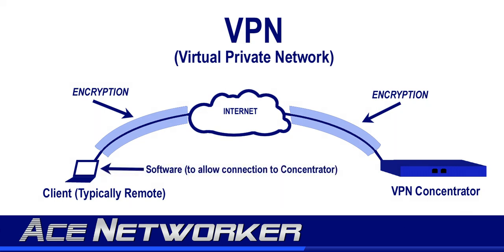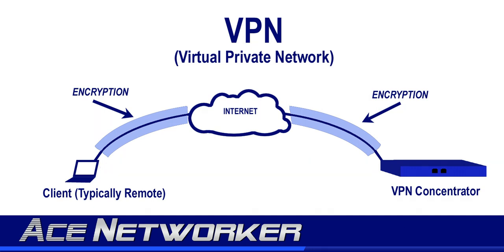A client computer will then have some form of software application that connects to the VPN device or server across the internet. Once the connection is made and the user and device has been authenticated, the VPN device allows the system access to the internal network, as if the remotely connected computer were sitting on a desk inside the building housing that network, and it encrypts the data as it travels across the internet. Since a VPN uses encryption, it allows secured communication to remote systems or sites across the public internet, providing a simple, easy, and relatively inexpensive method for WAN connectivity — wide area network.